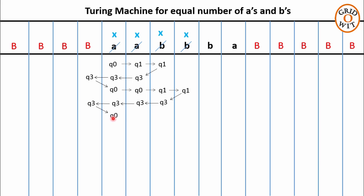Now in the next iteration, q0 will skip all these Xs, move towards the right, and on reading symbol B, replace it with X, take a right move, and the machine will change its state from q0 to q2. This point is very important: in any iteration, if q0 reads symbol A as the first symbol, then the state is changed to q1. And in any iteration, if q0 reads symbol B first, then the state is changed to q2. Remember this point.